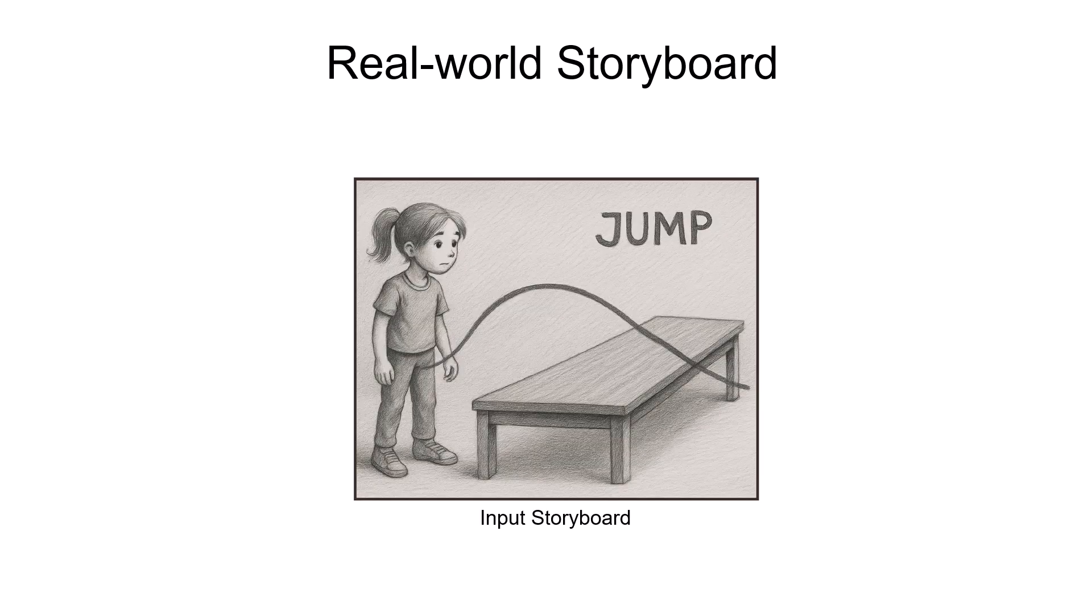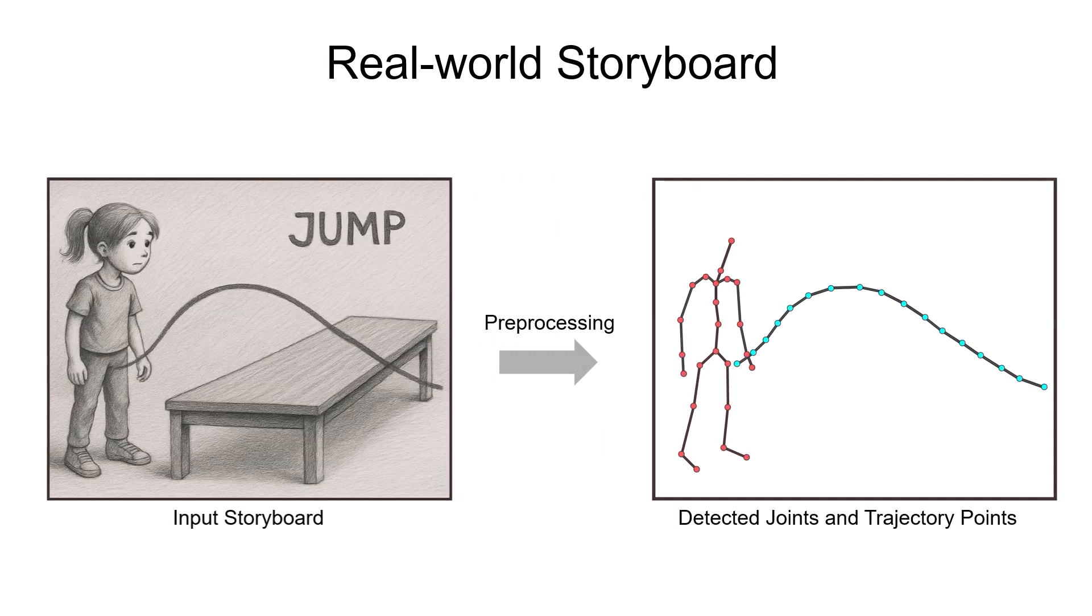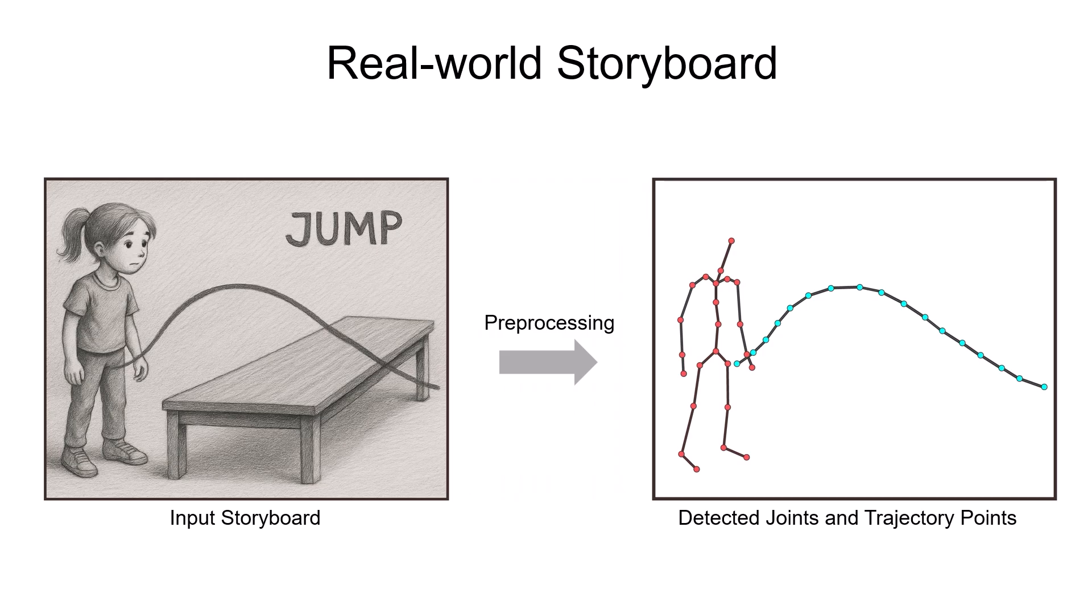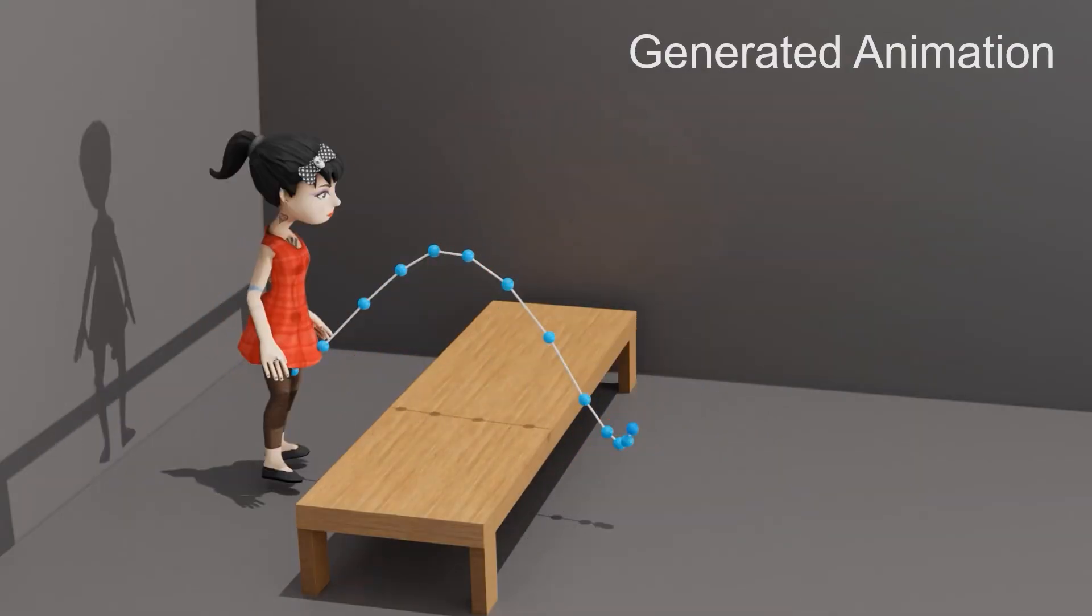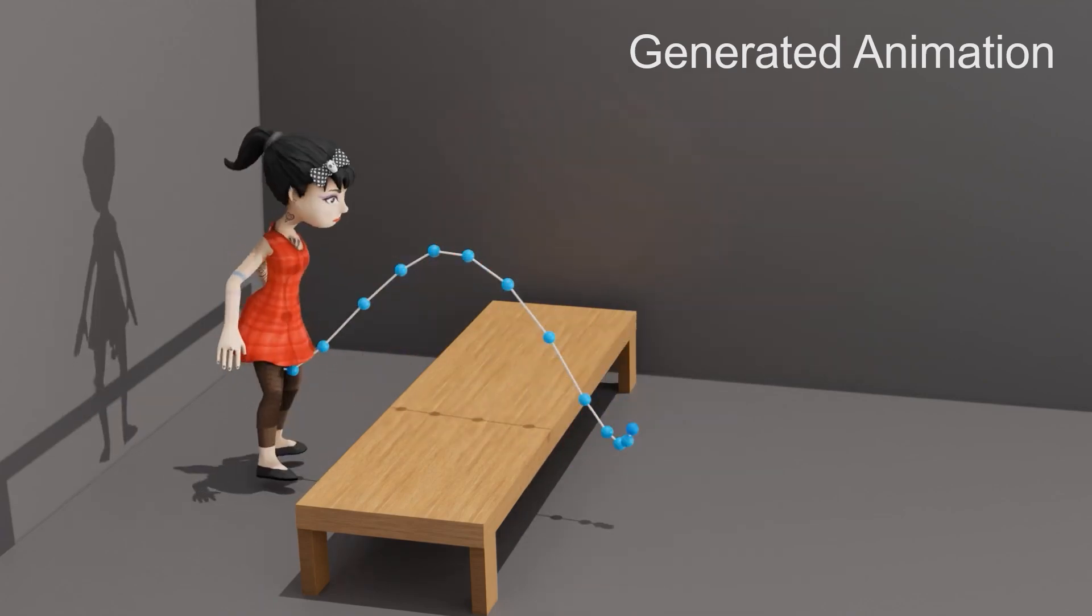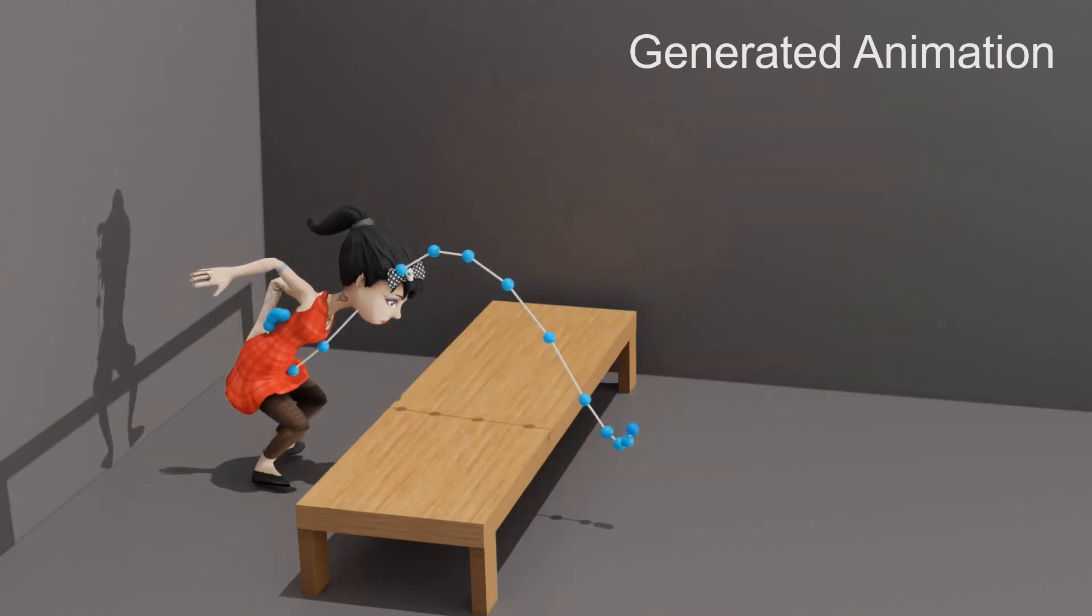Our approach is not limited to handling stick figure style storyboards. For example, given a real world sketch storyboard, we first extract joints and trajectory points. Then our framework successfully generates an animation clip. Note that we manually modeled the indoor scene with a table for better visualization.